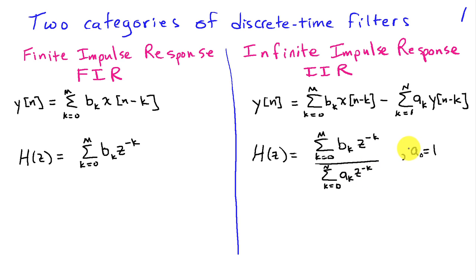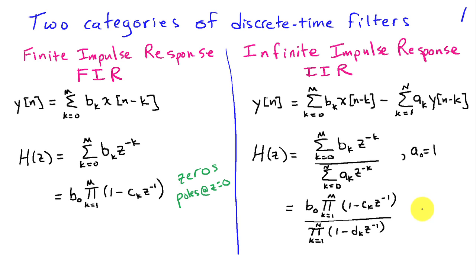In this notation for this particular difference equation, we're assuming that a zero is equal to one. The FIR filter has zeros, and then the only poles that the FIR filter has are at z equals zero, whereas the IIR filter has both poles and zeros in arbitrary locations. So we have a lot more flexibility in terms of the types of systems that we can accomplish with an IIR filter because we can place both the poles and the zeros in the IIR case.